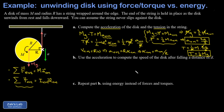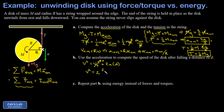In part B, we use the computed acceleration to find the speed of the disc after it falls through a distance d. Starting from rest, the kinematics equation is v² = v₀² + 2a·d. With v₀ = 0 and a = 2g/3, taking the square root gives v = √(4gd/3).